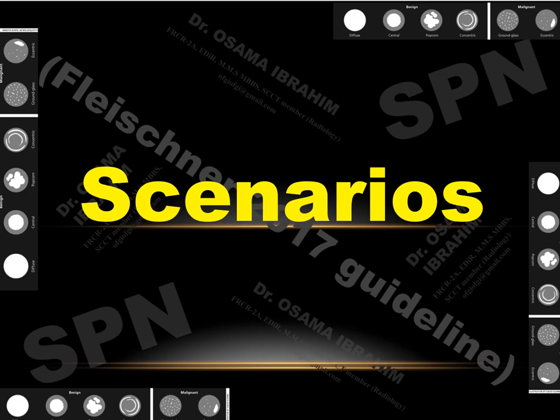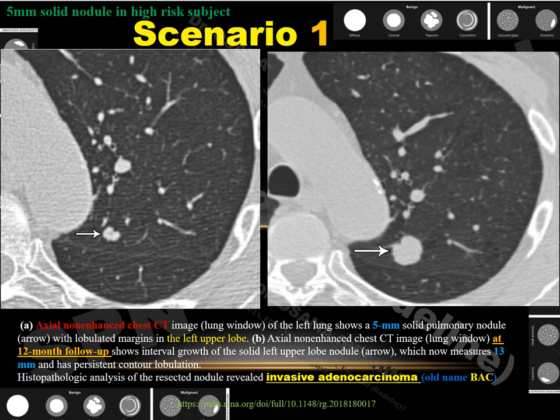Scenario 1: A 5 mm solid nodule in a high-risk subject in the left upper lobe with irregular outlines. At follow-up after 12 months, the nodule grew to 13 mm, suspicious for malignancy. Histopathology revealed invasive adenocarcinoma (formerly bronchoalveolar cell carcinoma). This demonstrates how malignancy can be detected through guideline-based follow-up.